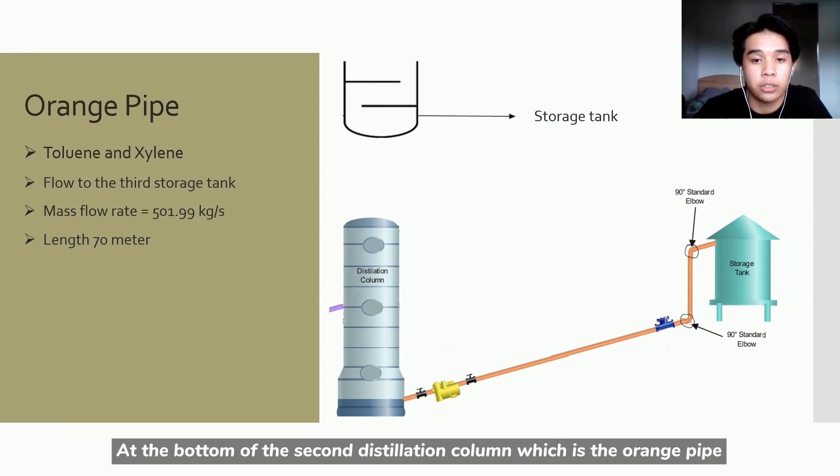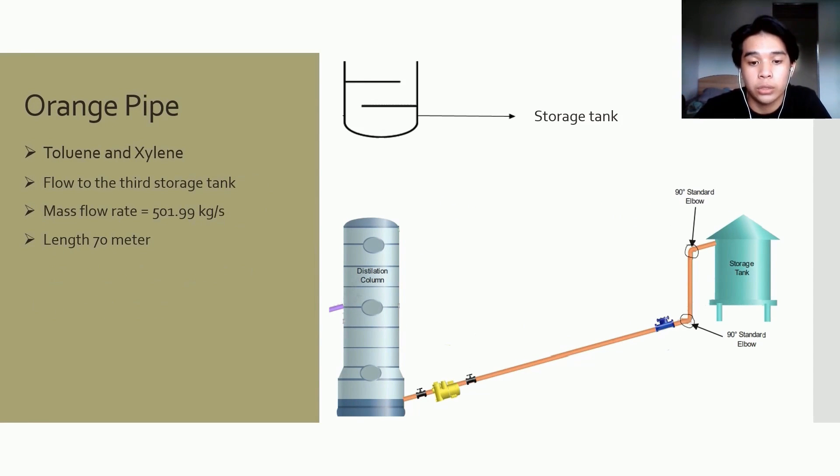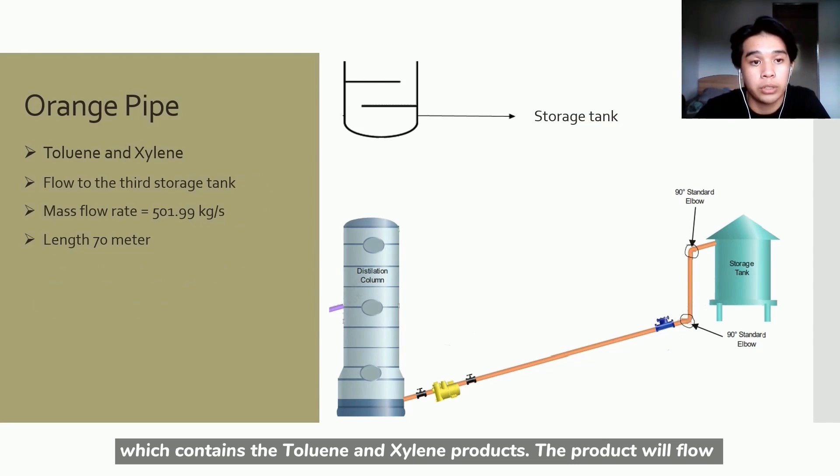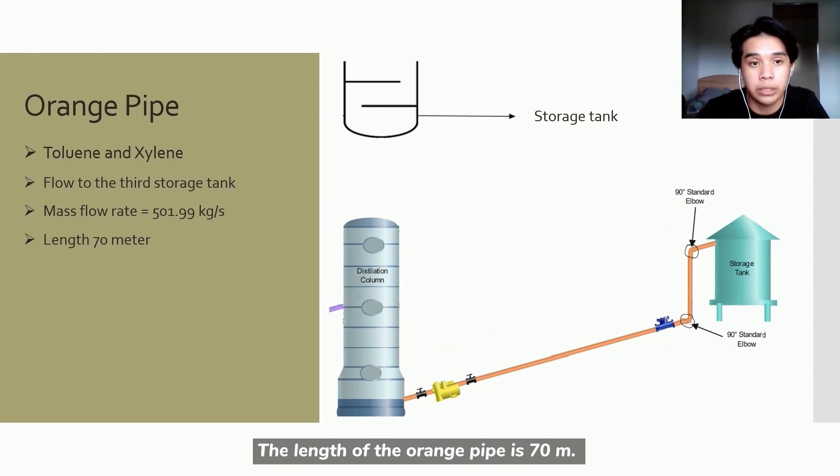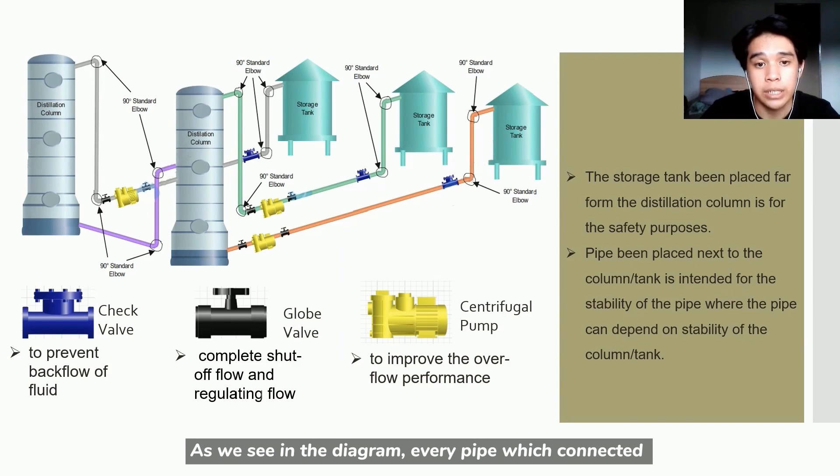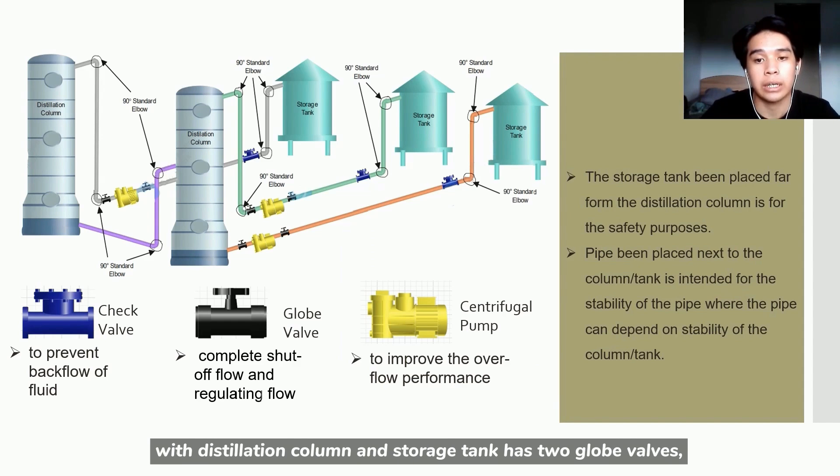At the bottom of the second distillation column, which is the orange pipe, which contains toluene and xylene products. The product will flow to the third storage tank with mass flow rate 501.99 kg per second. The length of the orange pipe was 70 meters. As we see in the diagram, every pipe which is connected with distillation column and storage tank has two globe valves, one check valve, and one centrifugal pump.